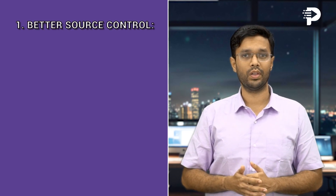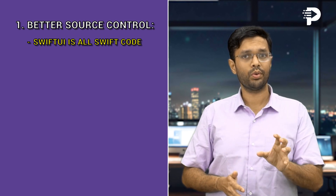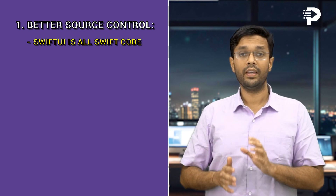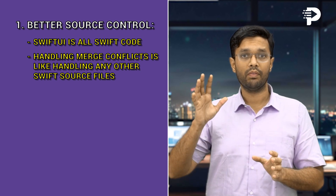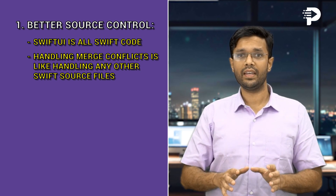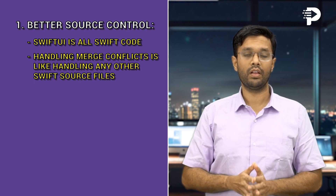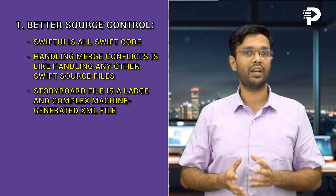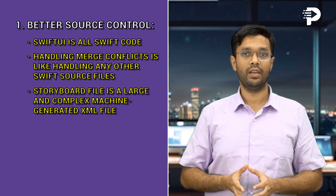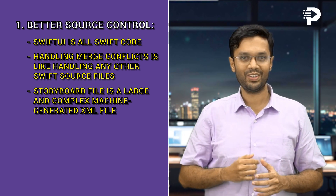Benefit number one is better source control. SwiftUI is entirely Swift code to generate the UI. Hence, it's done with merge conflict errors and there are no conflicts when you try to work in Swift source files. However, the Storyboard file is a large complex machine-generated XML file, making merge conflicts almost nerve-wracking to resolve.